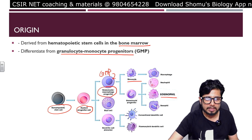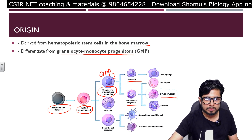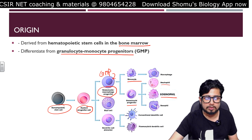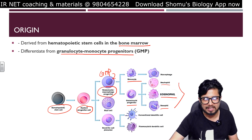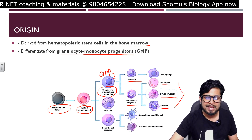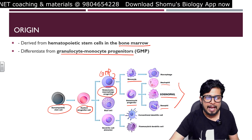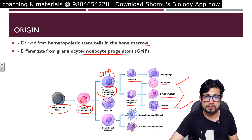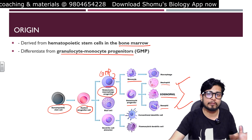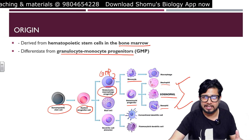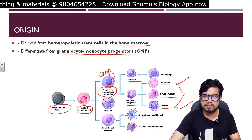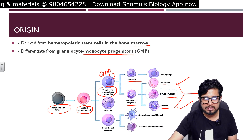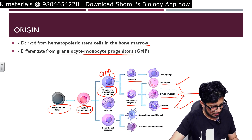From the GMP progenitor, they separate into monocyte and granulocyte progenitors. From the granulocyte progenitor, neutrophil, eosinophil, and basophil — all three white blood cells — are produced. We have talked about neutrophil and basophil in separate videos. If you want to know about those cells, you can watch those videos. But now it's time to talk about eosinophil.